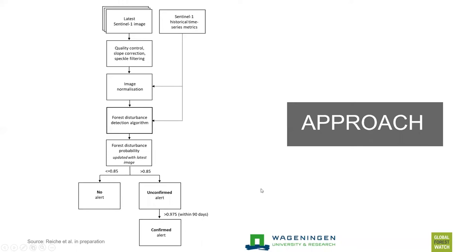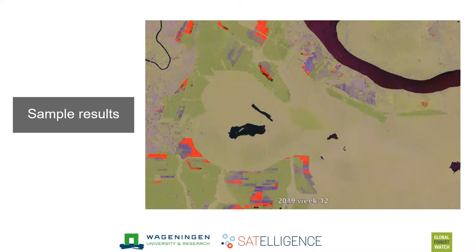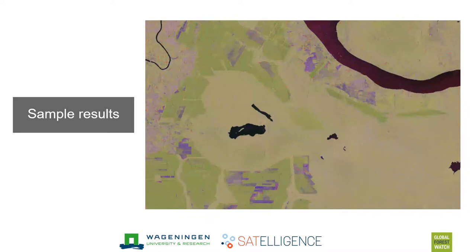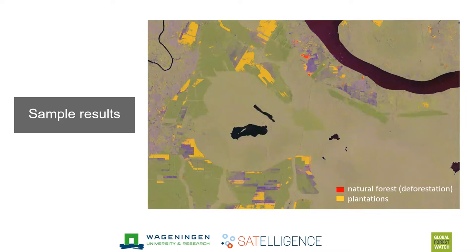Here's the same area in Indonesia, going week by week and picking up detections in red. What's notable about this system compared to Landsat or Sentinel-2 is that we're getting information each and every week — it's very reliable and consistent. Most of the changes are happening within the green oil palm plantations, so we can separate out plantation cycling shown in yellow from areas that were natural forest and have now been deforested, shown in red along the river.